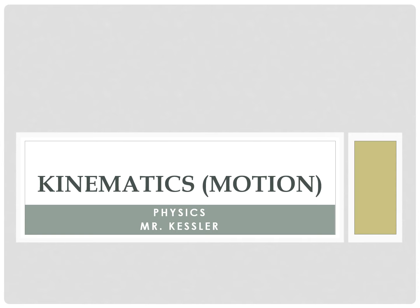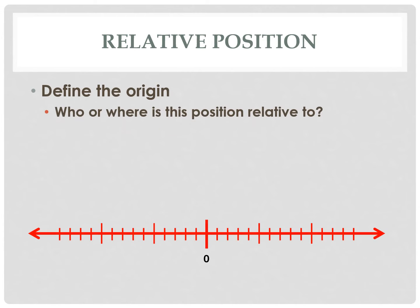Kinematics is actually a physics term that simply means motion. Before we can talk about the motion of an object, we first have to define a few things. Number one, what's the origin? Where are we starting from? Where are we taking all of our measurements from? Who or where is the position relative to?